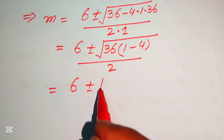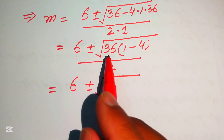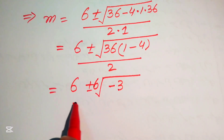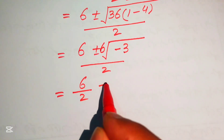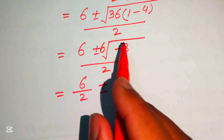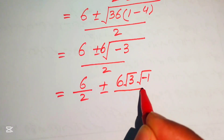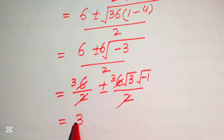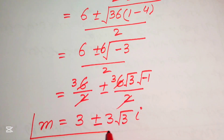We rewrite: inside the square root we have 36, and we take out the factor. The square root of 36 equals 6, and 1 minus 4 equals minus 3, divided by 2. We break the fraction: 6 over 2, plus or minus 6 times the square root of 3 times the square root of minus 1, divided by 2. Since 2 threes make 6, we obtain 3 plus or minus 3 times the square root of 3 times iota, since the square root of minus 1 equals iota. These are the values of m.